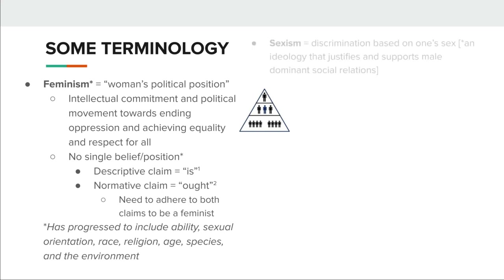We currently live in patriarchal societies, which means we have a hierarchy like a triangle where power is concentrated at the top with very few people in charge, and the majority of people are at the bottom with the least amount of power. A patriarchy refers to this system being male dominant, meaning the higher up you go in the hierarchy, the fewer women there will be. Going back in history, there would be no women at the top, and those individuals at the top have the power to make decisions for those at the bottom.